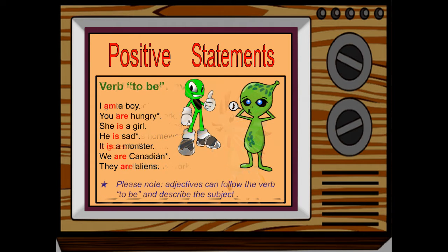Finally, the last irregular verb is the verb to be. We use am, is, or are in the present simple. Adjectives can follow the verb to be and describe the subject. Examples: I am a boy; with an adjective, you are hungry; she is a girl; with an adjective, he is sad; it is a monster; we are Canadian; and they are aliens.